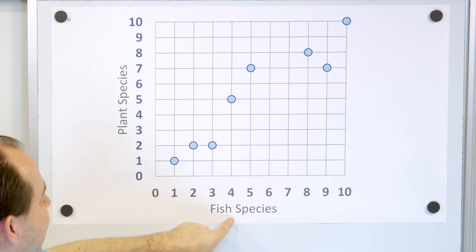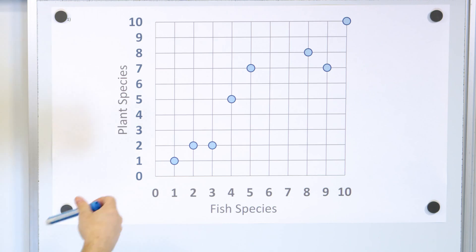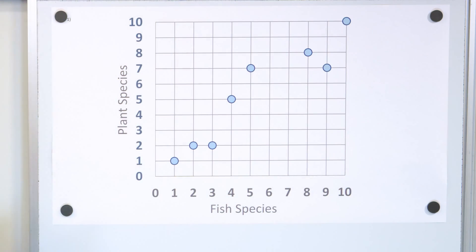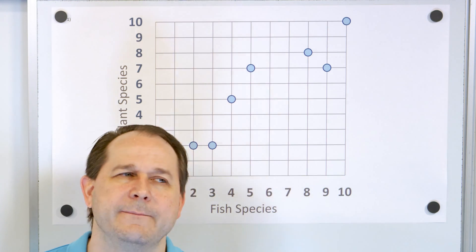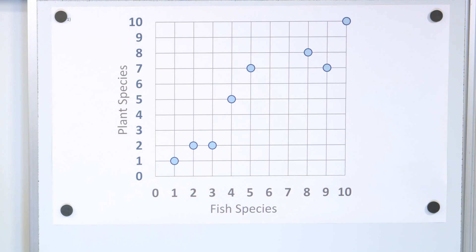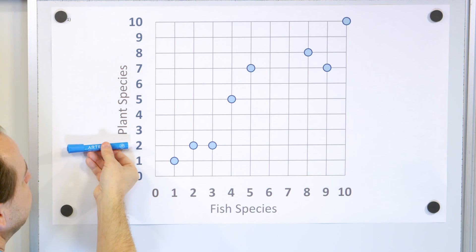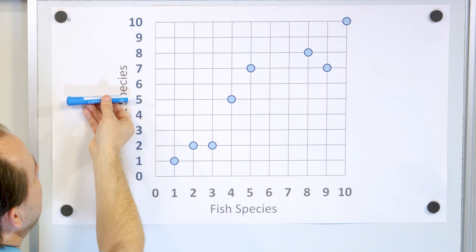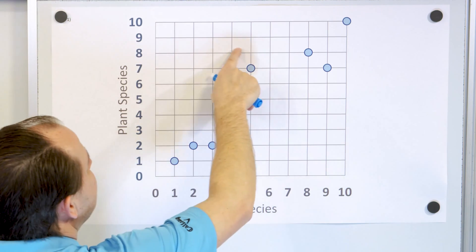Let's look at problem number one. Here is a scatter plot. On the x-axis we have the number of fish species in a pond, and on the y-axis we have the number of plant species in a pond. We don't usually draw lines to connect the dots in a scatter plot — we focus on the dots themselves, which is why it's called a scatter plot. In a pond with one species of fish, we only had one species of plant. In a separate pond with two species of fish, we had two plant species. This pond had three fish species and two plant species; this pond had four fish species and five plant species.